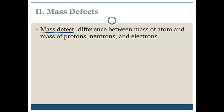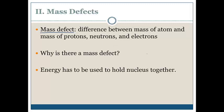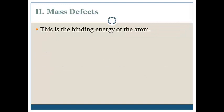So why is there a mass defect? Why does the atom actually weigh less than all the protons, neutrons, and electrons? And don't forget, energy has to be used to hold the nucleus together. Now where did this energy come from? This is called the binding energy of the atom. And remember Einstein. E equals MC squared.